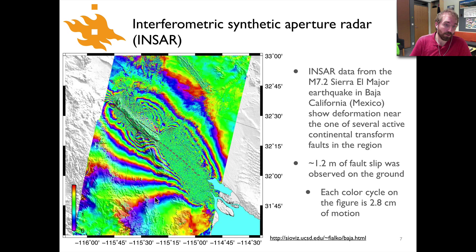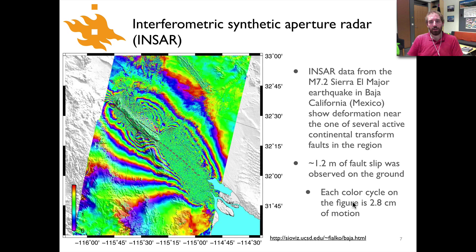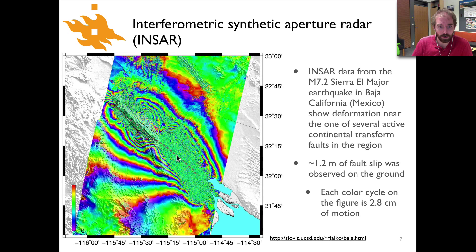Each wavelength offset — each full color cycle — represents a certain amount of displacement of the earth's surface. For this image from Baja California, that's about 2.8 centimeters per color cycling. Close to the fault, traced by the dashed line, it's really dense, but if you add up the many repeating color cycles you get something close to the 1.2 meters of fault slip observed on the ground. The great thing about InSAR images is that you can get very high resolution maps of displacement of the earth's surface.